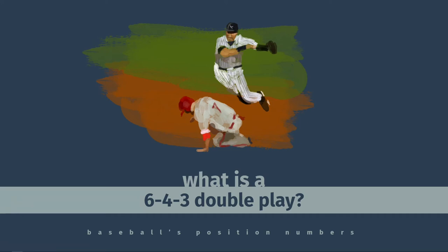Every once in a while, a baseball announcer will say that a team has turned a 6-4-3 double play, in which case you might be wondering where those numbers came from and what they're referring to.